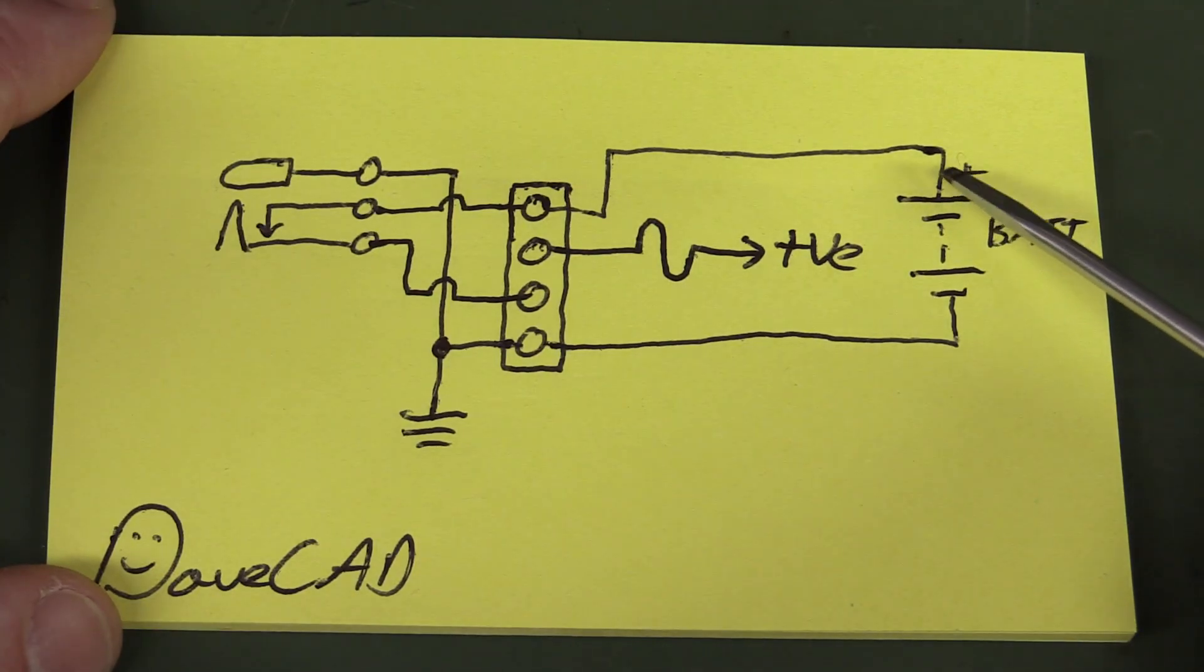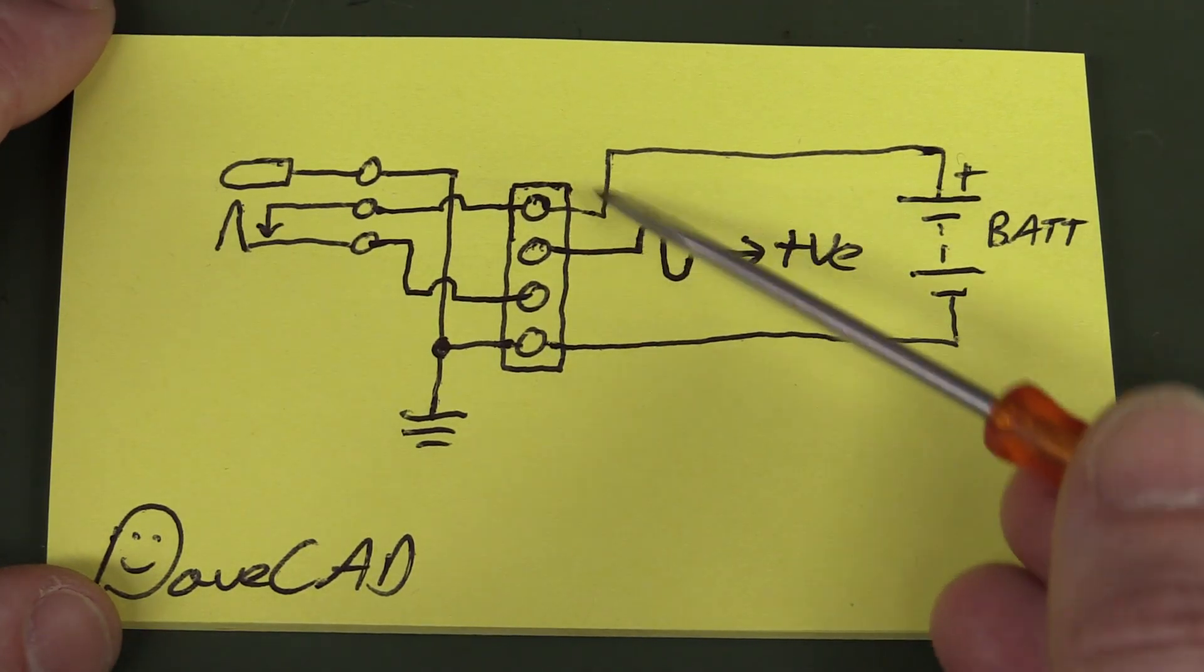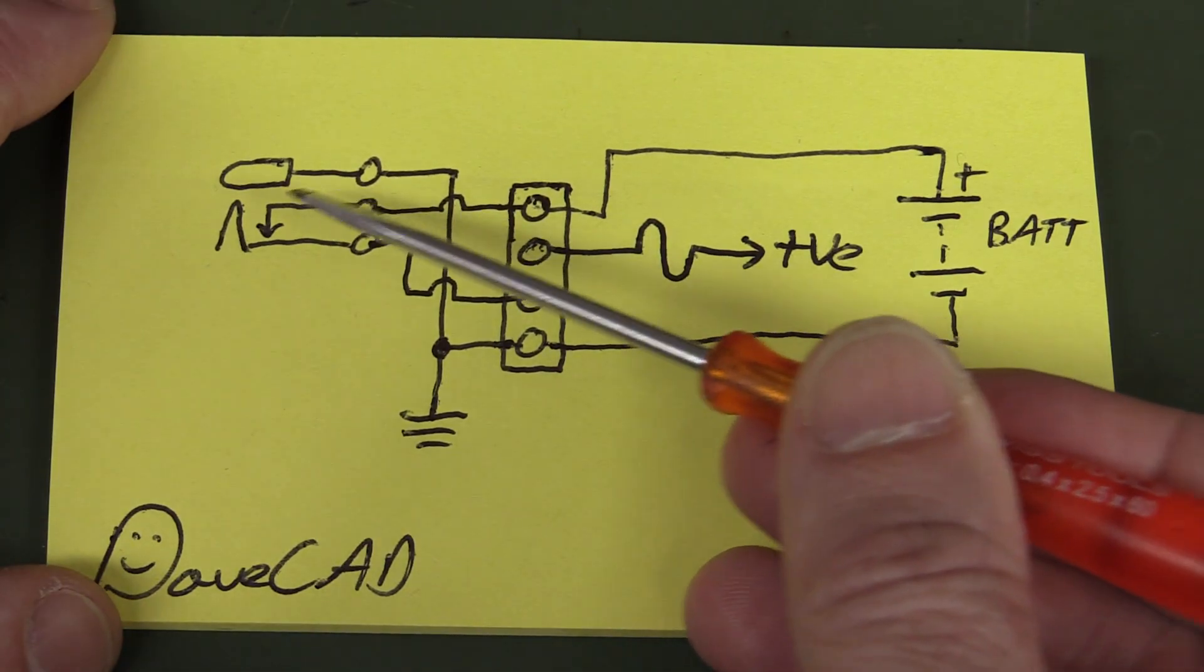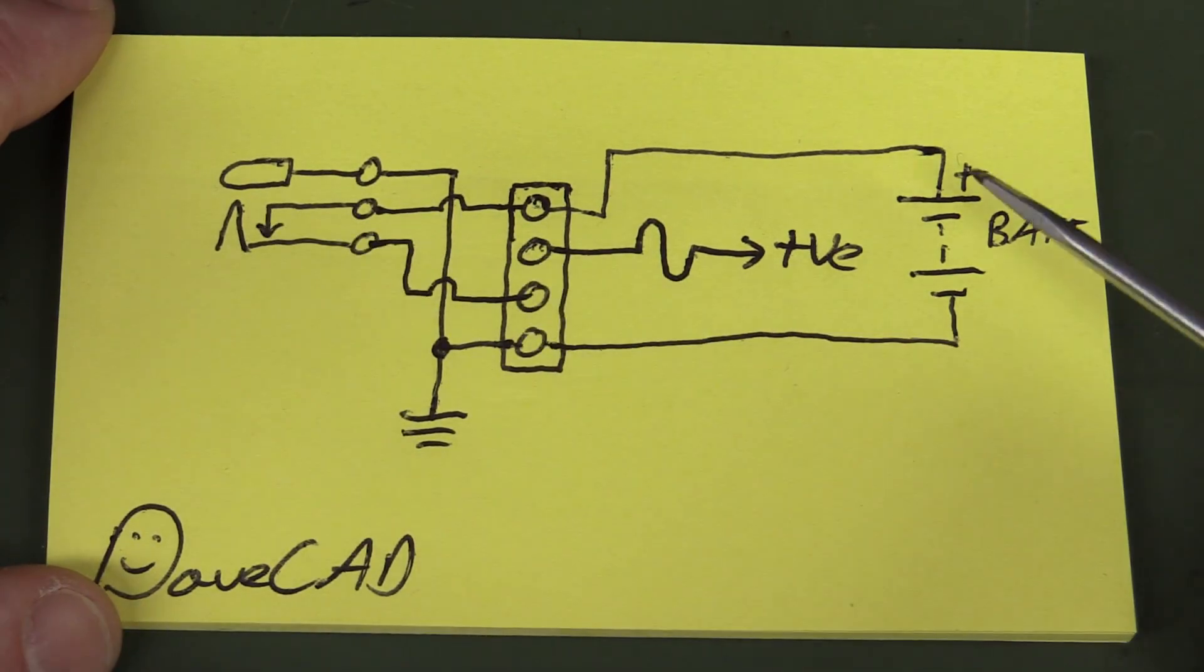But if it did, then the positive of the battery would be connected over to here, and hence, pin 3, that switch contact on the DC jack.